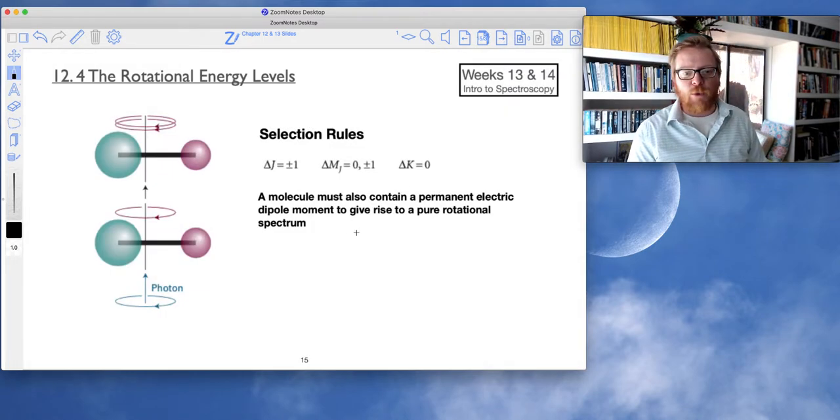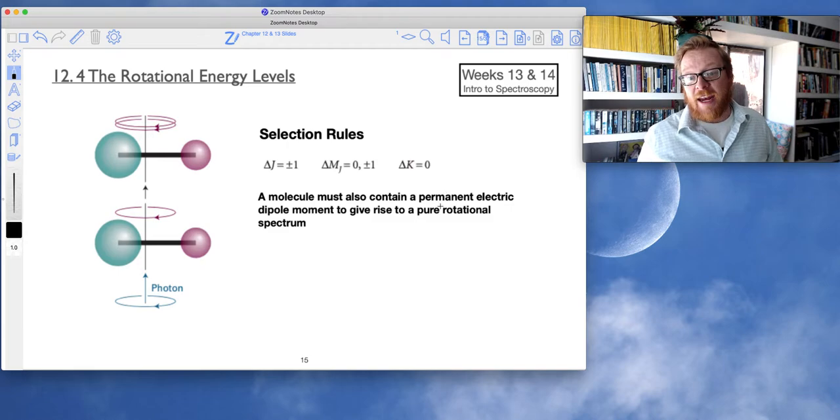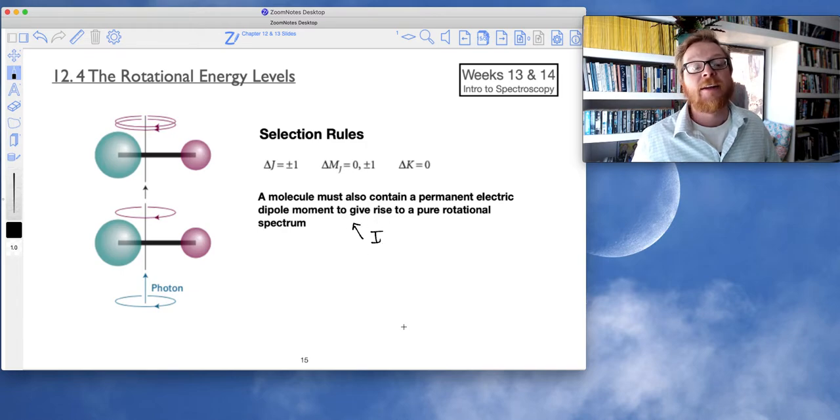If we think about the selection rules, a molecule must contain a permanent electric dipole moment to give rise to a pure rotational spectrum because that is going to give it a moment of inertia.